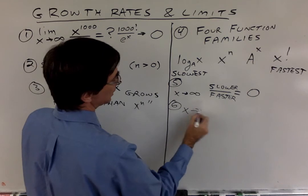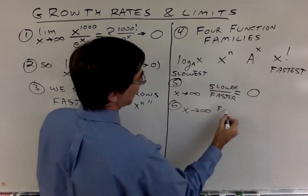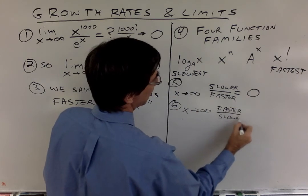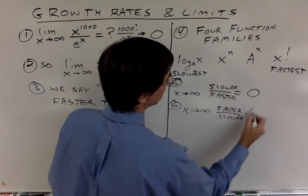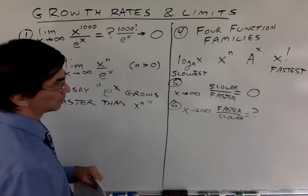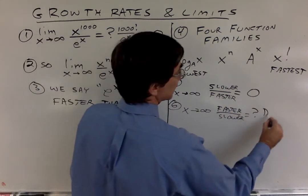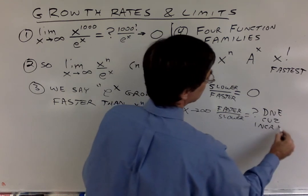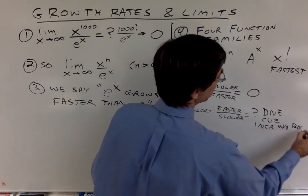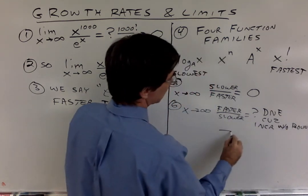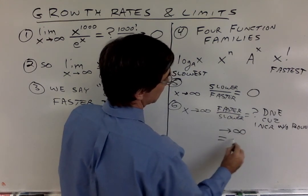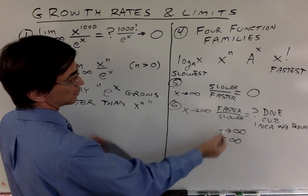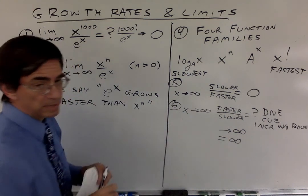And if you have x getting bigger and bigger, and you have a faster over a slower, ask yourself what the answer would be. The answer is it does not exist because it increases without bound. You could write infinity symbols, and we understand that means the limit does not exist because it's increasing without bound.